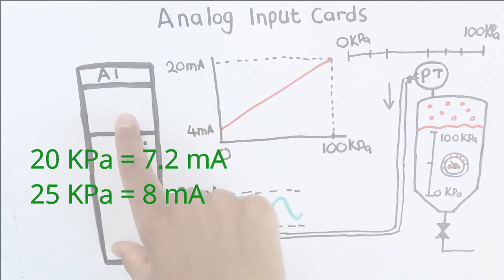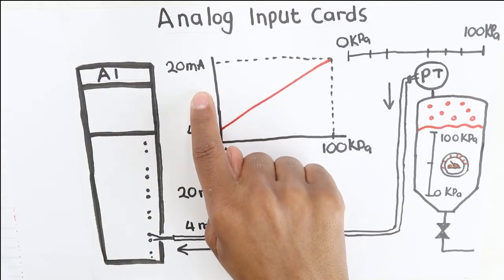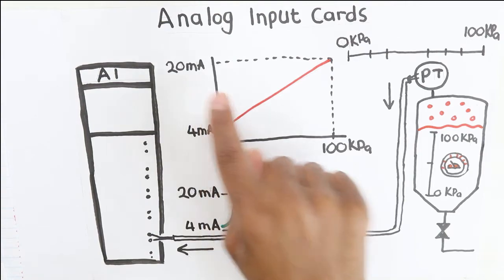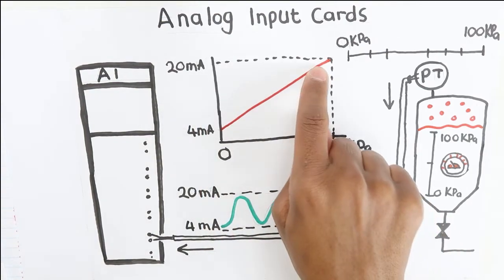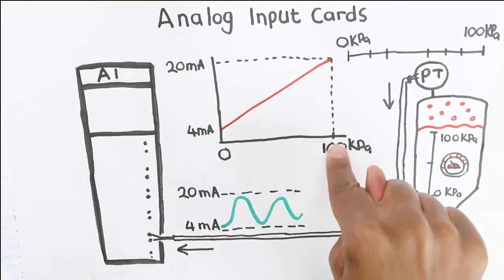If the pressure is at 50, the milliamp signal will be 12 milliamps. If the pressure is at 75, the milliamp signal will be at 16 milliamps. And of course at 100 kPa, the pressure signal will be at 20 milliamps.